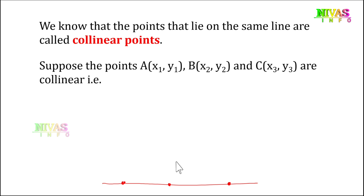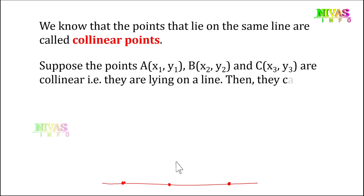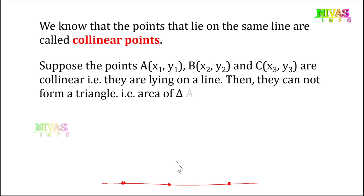They are lying on the same line. Then they cannot form a triangle. That is, area of triangle ABC is zero.